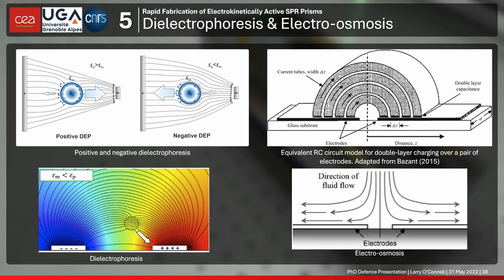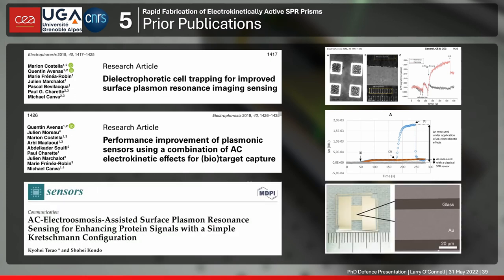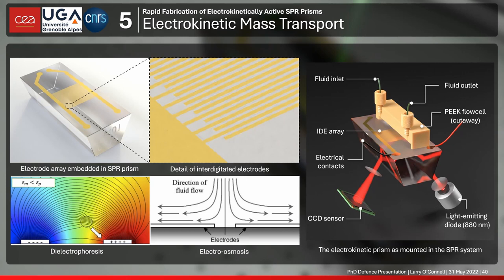When I decided to try this, there were only two papers describing something similar — from the same team, using a different geometry, and with no bio-functionalization of the surface, so they could detect something above the surface but without any biological interaction. Then, as often happens in research while I was writing my manuscript, another paper was published facilitating interactions between immunoglobulin G and anti-IgG using electroosmosis, but not dielectrophoresis. I'm hoping to build on that prior literature.